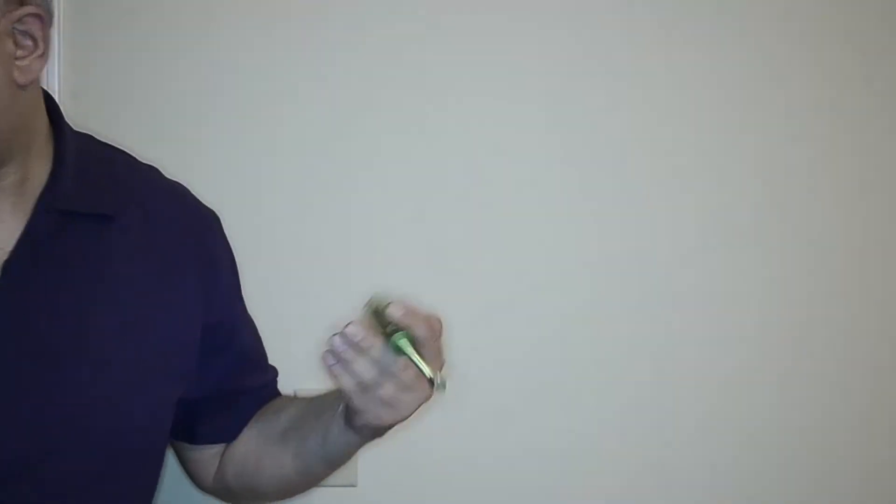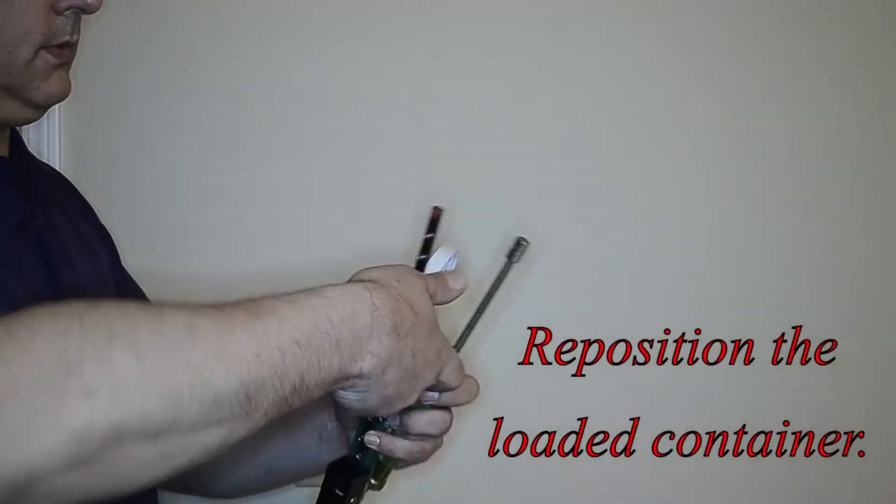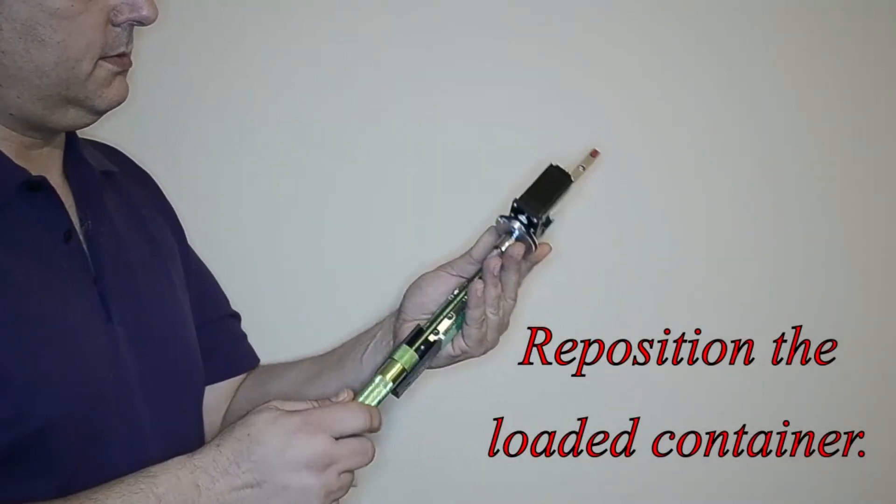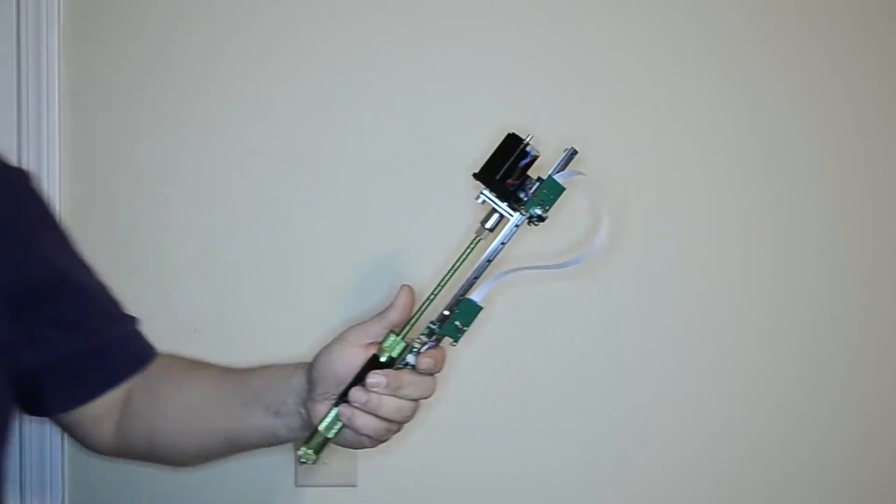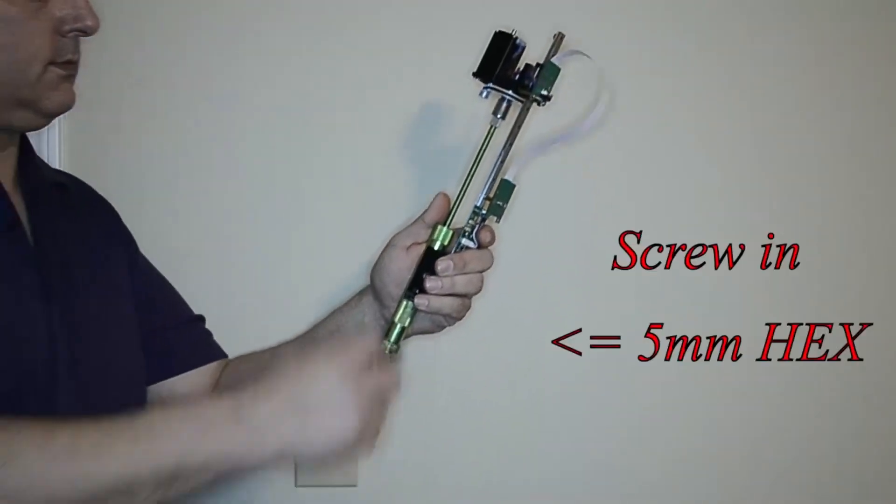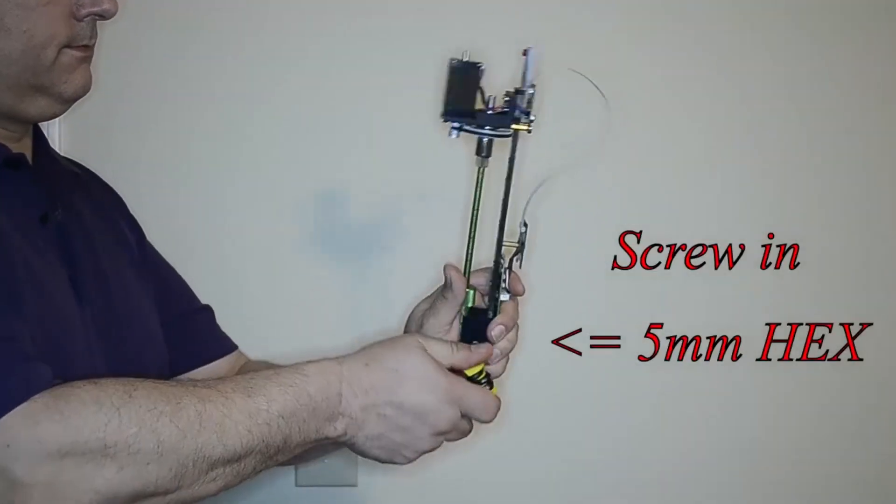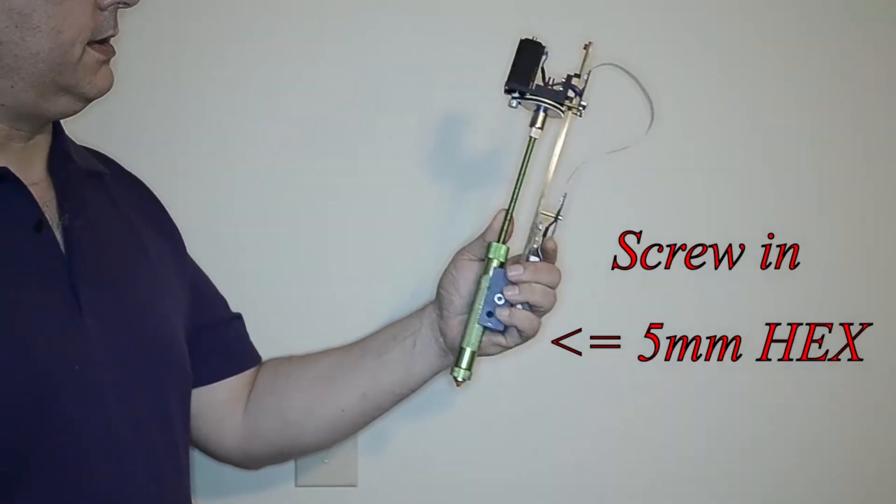Now that the tube is loaded, we'll reposition it in the motivator. Seat it firmly. And now you're ready to print.